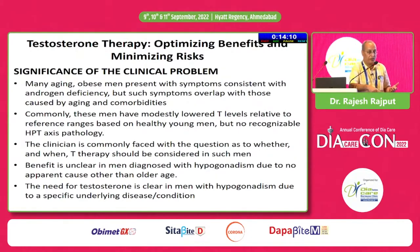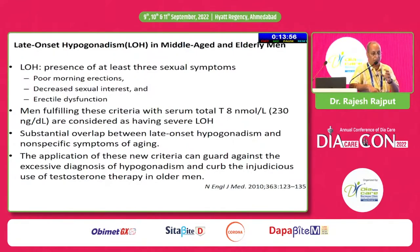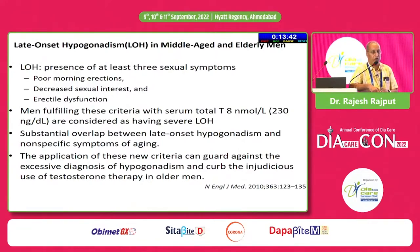Therefore, clinicians are often faced with the question — when they see a report — whether to treat or not to treat, and guidelines try to answer this question to some extent. There is a very important term in adult men: late onset hypogonadism. We are not talking of classical hypogonadotropic or hypergonadotropic hypogonadism, which has onset quite early. We are talking of middle-aged men — this is a newer term: late onset hypogonadism.